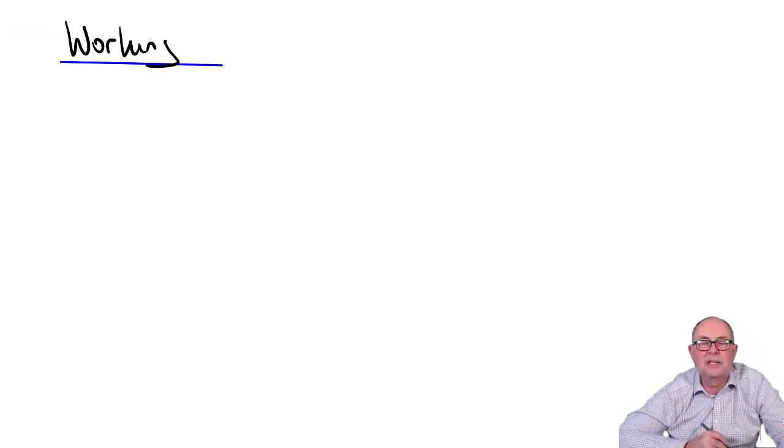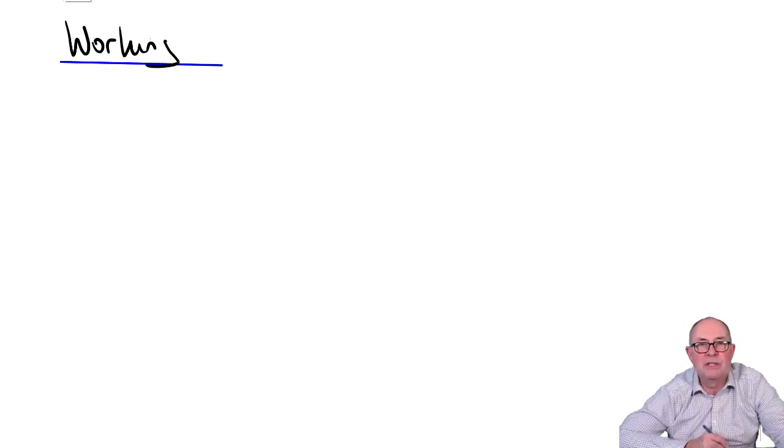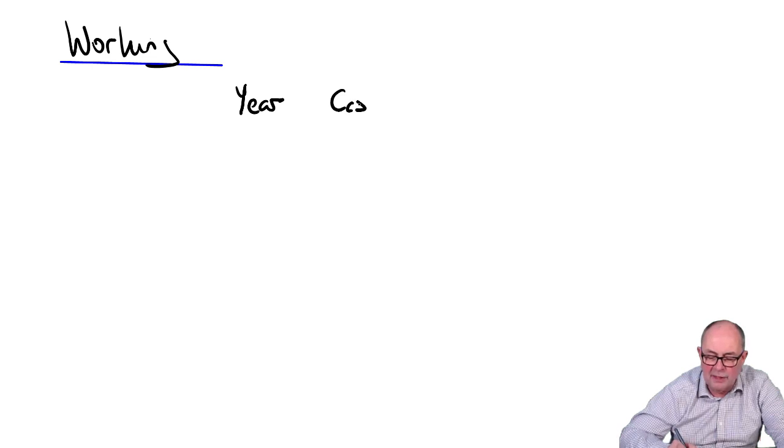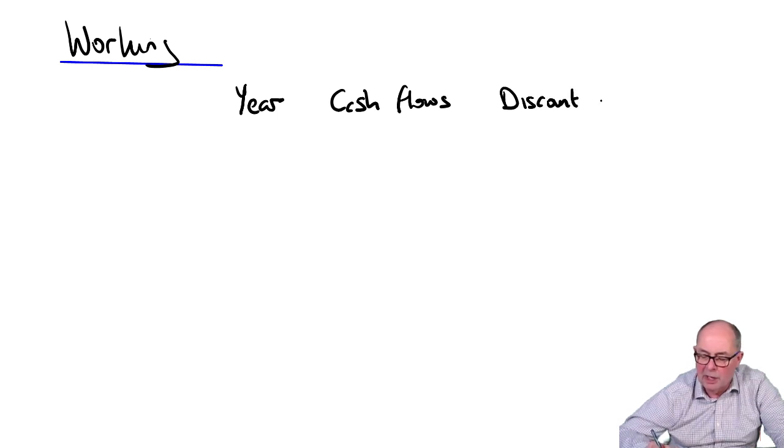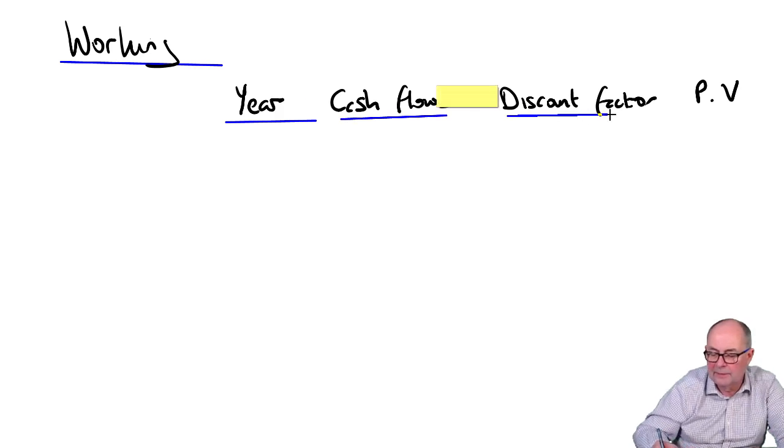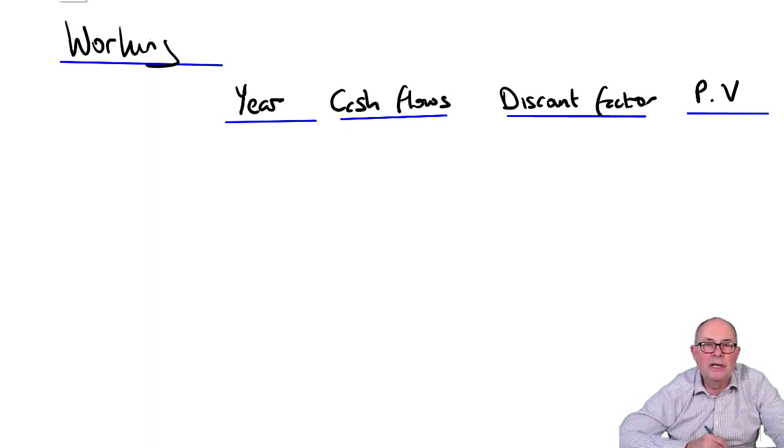So, I want to know the value of this asset in the books at the start of the lease. So, I'm going to do a discounted cash flow working in the same way as you've always done them when you've been doing financial management. I'll make a list of the years, a list of the cash flows. We'll do some discounting. I'll put discount factor and that will lead us to the end where we'd have the present values.